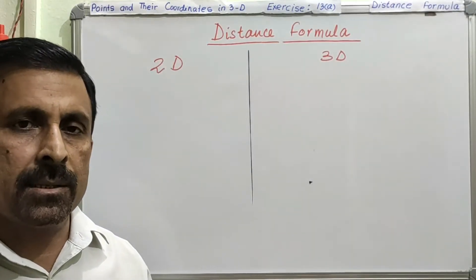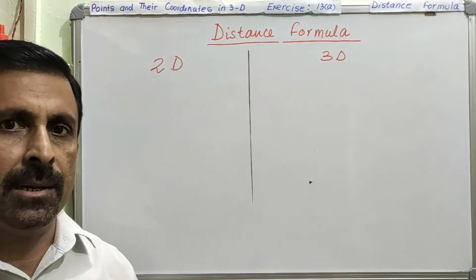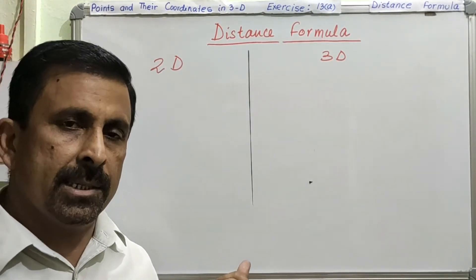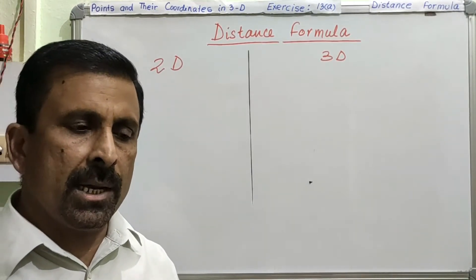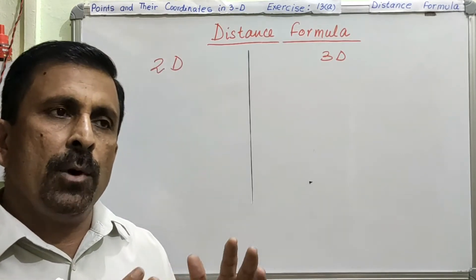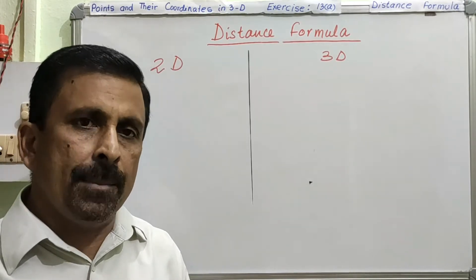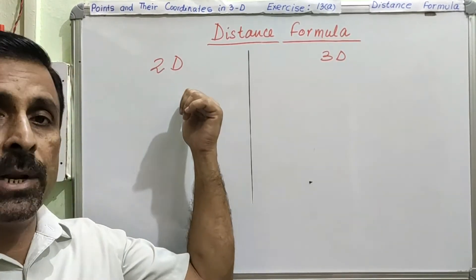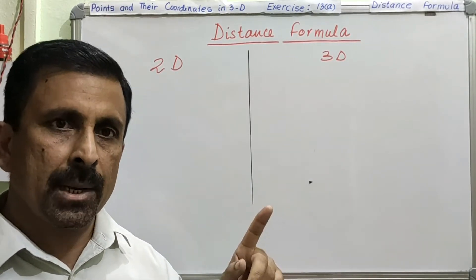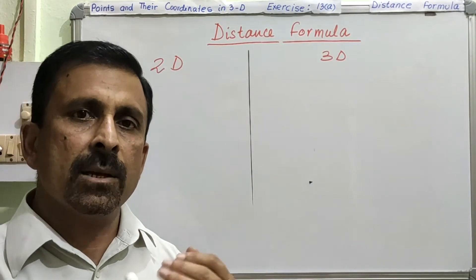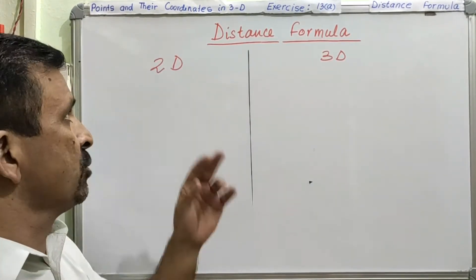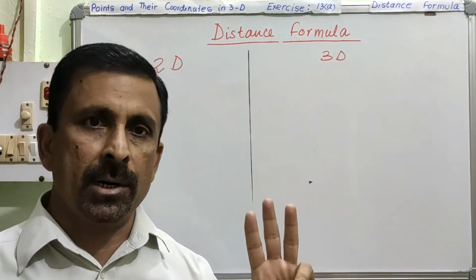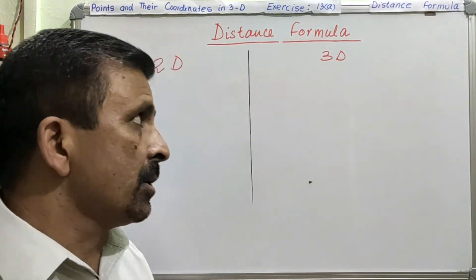Good morning. Today we are going to start Chapter 13, whose name is 'Points and Their Coordinates in 3D.' Last year we covered 2D coordinate geometry, and this year we are going to deal with 3D. There is not much difference between 2D and 3D. In 2D we had two coordinates, x and y. In 3D we will have three coordinates: x, y, and z.